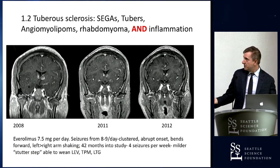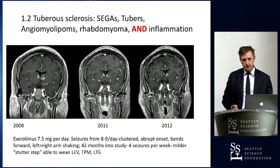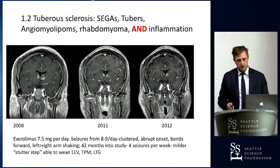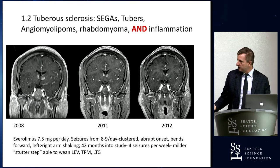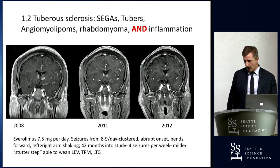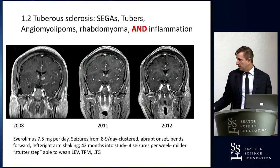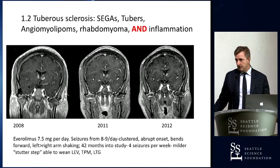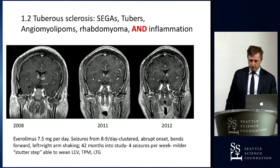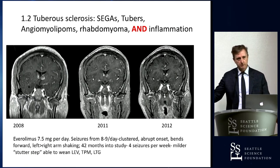Inflammation is one of the key things in understanding why the tumor is hard to treat — and in identifying targets for treatment. Here is one of my patients I've been following since 2008 with tuberous sclerosis. The classic abnormality for the neurosurgical fellows is the subependymal giant cell astrocytoma at the base of the lateral ventricles. It tends to grow and block the foramen of Monro.